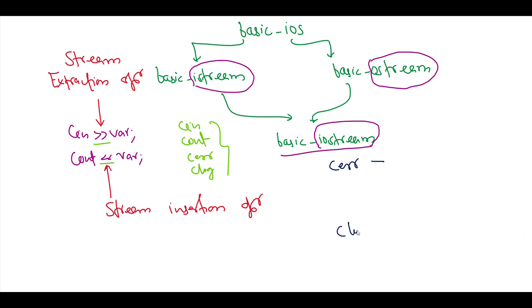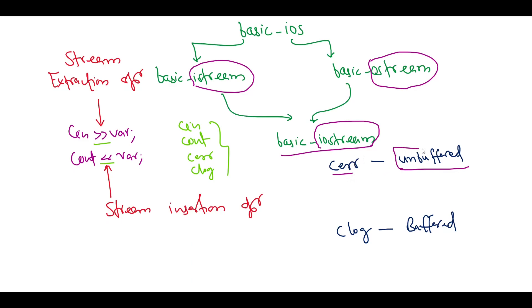cerr is called the unbuffered standard error stream and clog is the buffered standard error stream. cerr is an ostream instance connected to the standard error device, normally the screen. Output to cerr is unbuffered, meaning each stream insertion causes its output to appear immediately — this is appropriate for notifying a user promptly about errors. clog is buffered and stores output in memory before sending it to the output screen. Output is held in the buffer until the buffer is filled or flushed. Buffering is basically an IO performance enhancement technique.